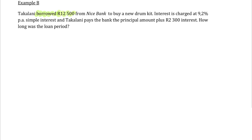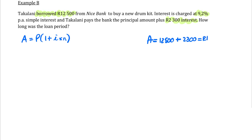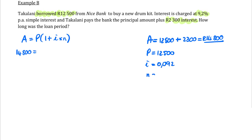We could also do Example B with the A formula. If we want to use the A formula, we need to know the total amount that Takalani has repaid. It's not 2,300 — that is just the interest she paid on top. So the amount she repaid is 12,500 plus the interest of 2,300, which gives us 14,800 rand. This is the A value. The principal is still 12,500, the interest rate is 0.092, and the time is what we need to know.